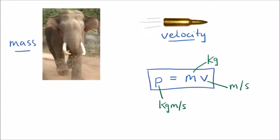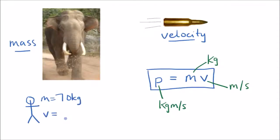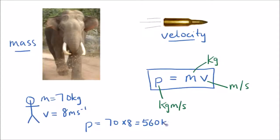So if an object has a mass — here's my object — it has a mass of 70 kg and it's moving with a velocity of 8 meters per second, then its momentum P will equal 70 times 8, and that gives us a momentum of 560 kg meters per second.